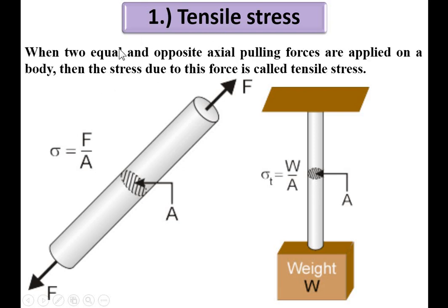The definition of tensile stress: when two equal and opposite axial pulling forces — equal in magnitude, opposite in direction, and axial meaning the line of action of this force is exactly on the axis of the rod — are applied on a body, then the stress due to this force is called tensile stress. The formula: stress equals load divided by normal cross-sectional area. In the examination, write down the definition and draw the same figure in your answer.